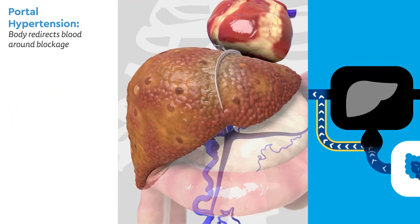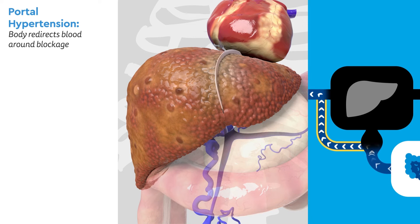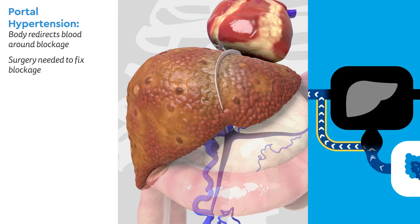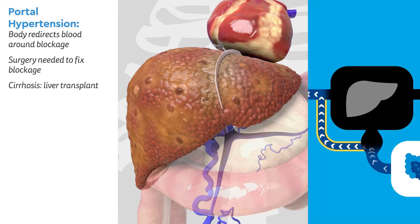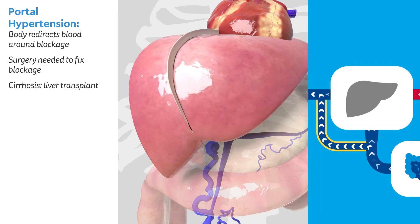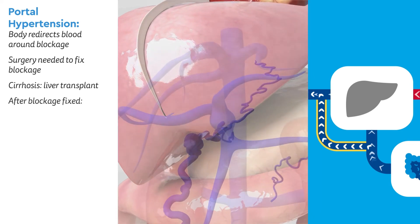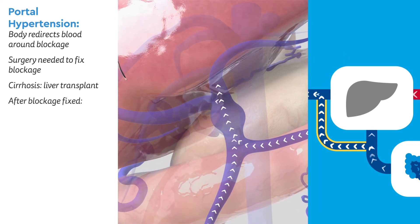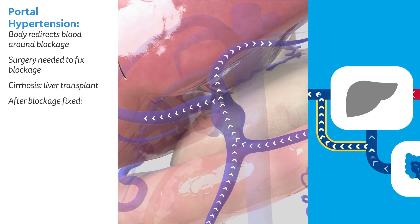This new blood flow is how the body works around portal hypertension. However, a long-term solution requires surgical intervention. In the case of cirrhosis, the only way to fix the blockage is to replace the entire liver. After the blockage has been fixed, blood flows freely through the portal vein once more.